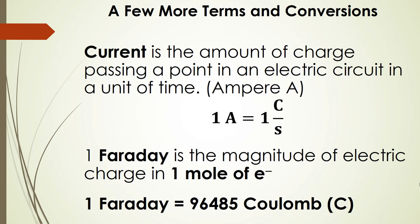Now current, this is the amount of charge that passes a point in an electric circuit in a unit of time and usually this unit of time is seconds. The definition for an amp or an ampere is one coulomb per second. A faraday, this is the magnitude of electric charge in one mole of electrons and it's given in coulombs as well. So one faraday represented with capital F is equal to 96,485 coulombs.